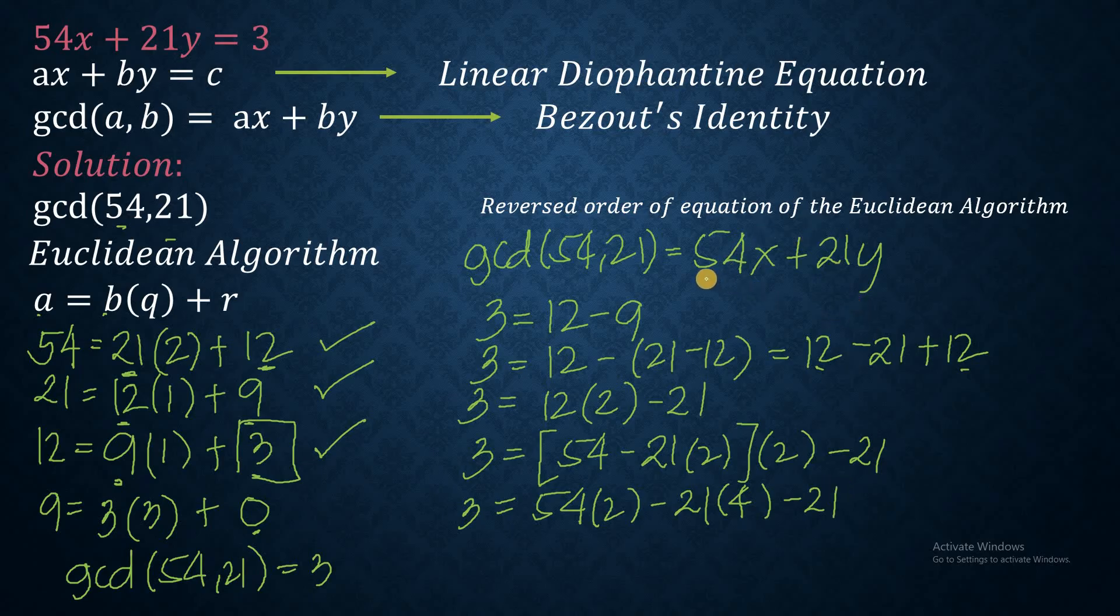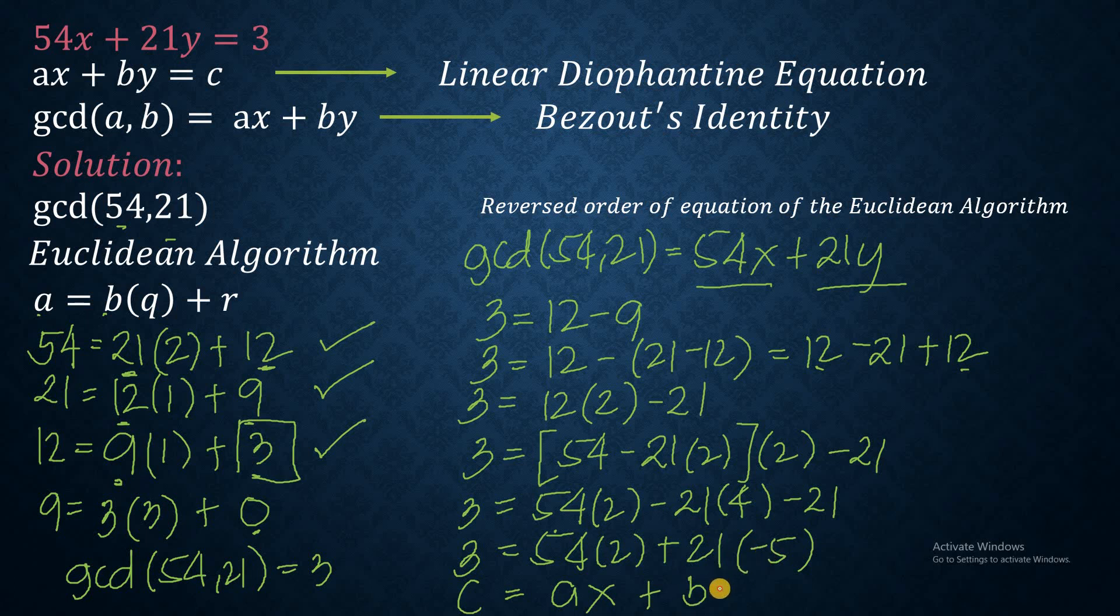The goal for this is to come up with this equation 54x plus 21y. So we already have 54 and 21. We just need to make it exactly like this. So we have 3 is equal to 54 multiplied to 2. And then this is a positive sign, so we make use of a plus sign there, followed by 21, followed by 21. And then you have a negative 4 and a negative 1, so that's minus 5. So this is our c value. This is our a value, x value, plus b value, and then this is our y value. So therefore, our x value is equal to 2, and then our y value is equal to negative 5.